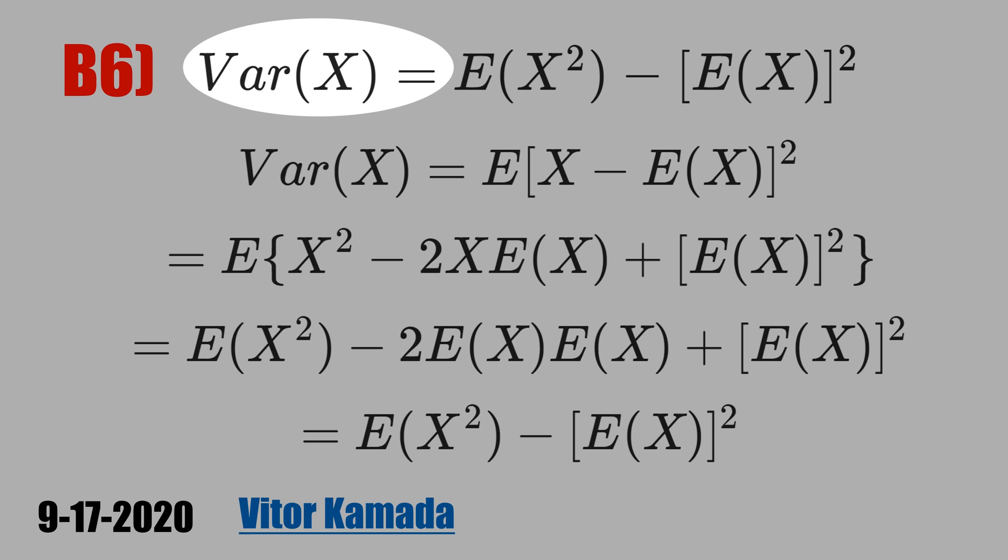In this video, let's prove that the variance of a random variable X can be written as the expected value of X squared minus the mean of X squared.